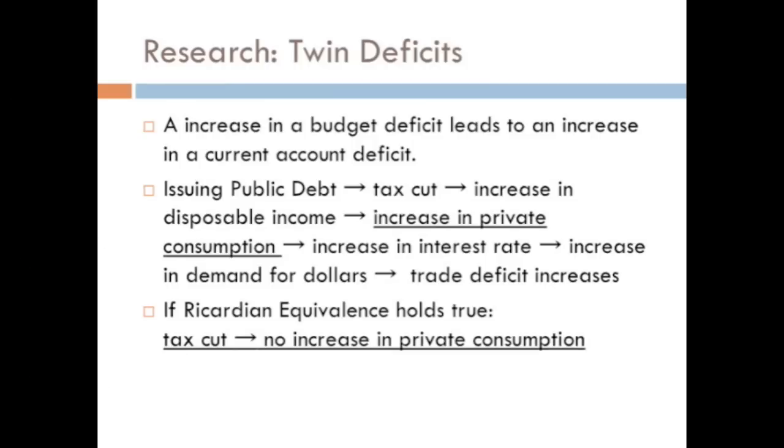Our third theory is the twin deficits theory. This is when a budget deficit causes a current account deficit. The logic behind this is straightforward. When the government issues a tax cut, people consume more. This consumption increases the interest rate, which increases the demand for dollars as investors want to save in the United States. This causes a trade deficit as exports become relatively cheaper.